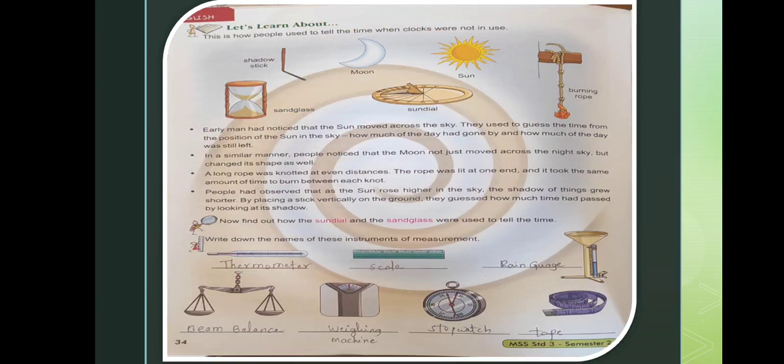Here is Let's Learn About. This is how people used to tell the time when clocks were not in use. So when in previous times people didn't have time clocks, how did they identify the time? Let's see here: shadow stick, moon, by sun, by sand glass, by sun, by burning rope. These they have used to identify the time.